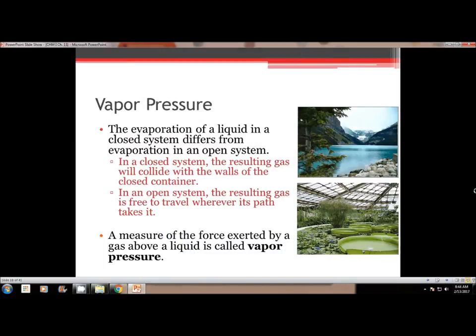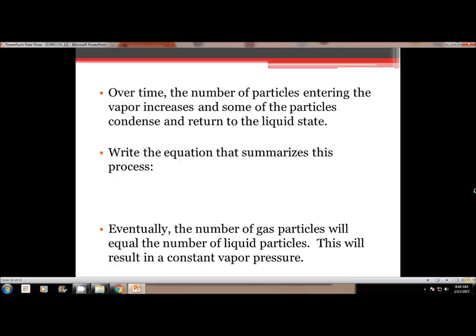Vapor pressure is what it's called when we have a force exerted by a gas above a liquid. The vapor pressure of a liquid in a closed system differs from an open system. In a closed system, so like this is a picture of like a terrarium or like a botanical garden or something like that, the resulting gas will collide with the walls of the closed container and create a pressure inside, and it's something easily measured. But in an open system, like if you have like a lake or something, then the resulting gas is free to travel wherever it takes, wherever it wants to go. And so because it's able to travel, it's actually harder to measure the vapor pressure. Over time, the number of particles entering the vapor increases, and some of the particles will condense and return to the liquid state. So we need to write the equation that summarizes this.